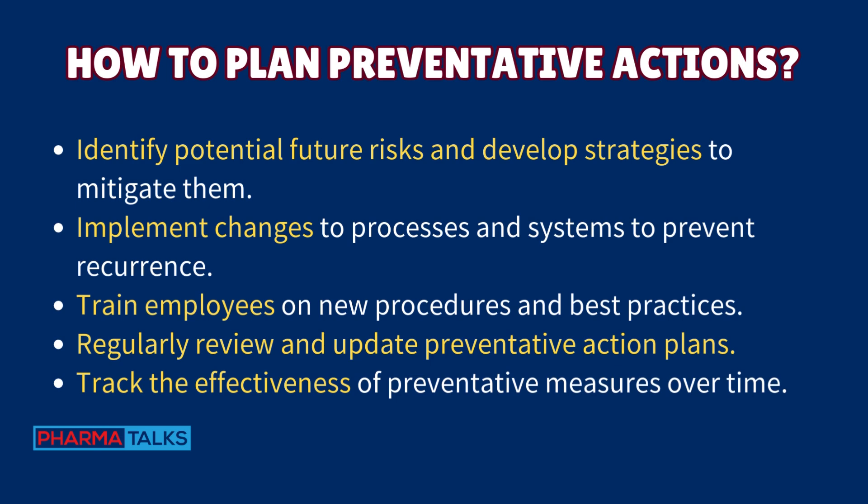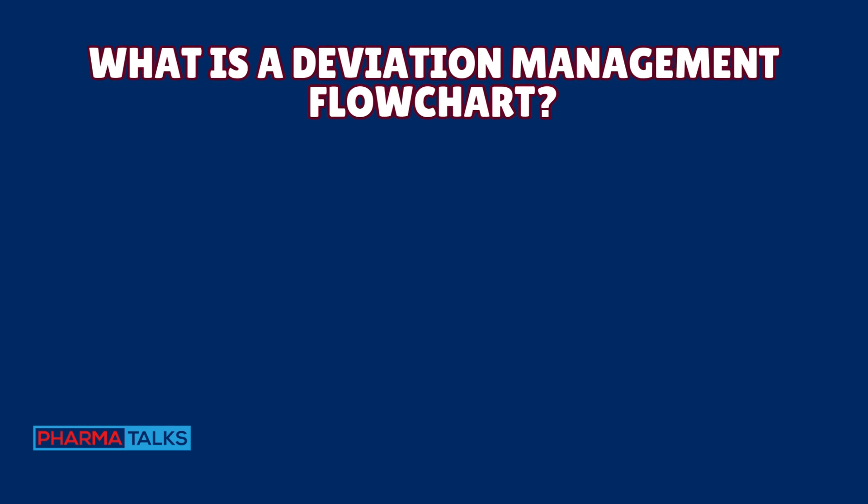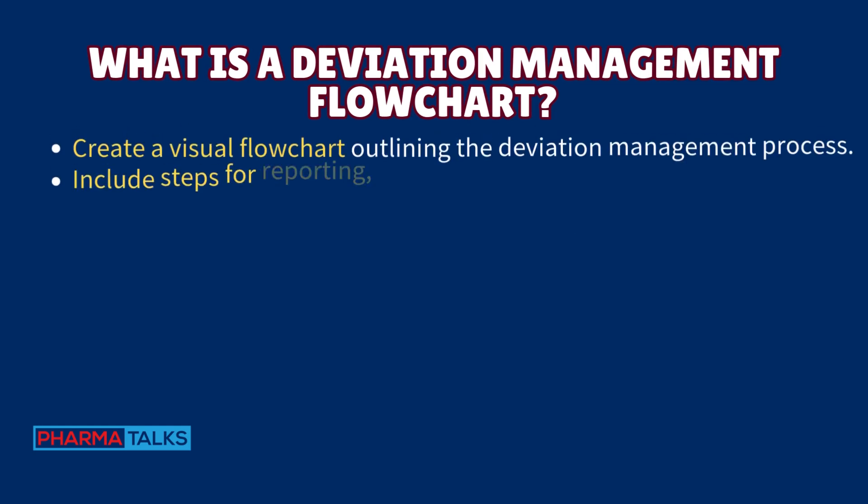For preventative actions, identify potential future risks and develop strategies to mitigate them. Implement changes to processes and systems to prevent recurrence. Train employees on new procedures and best practices, regularly review and update preventative action plans, and track the effectiveness of preventative measures over time.